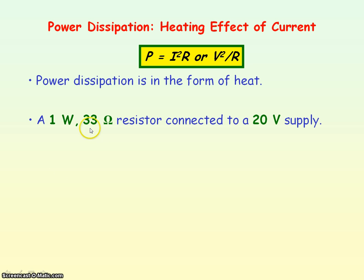Consider a 33 ohm resistor connected to a 20 volt power supply. To determine the power dissipated across the resistor, we use V squared divided by R. That's 20 squared divided by 33, which gives us a power dissipated of 12 watts.